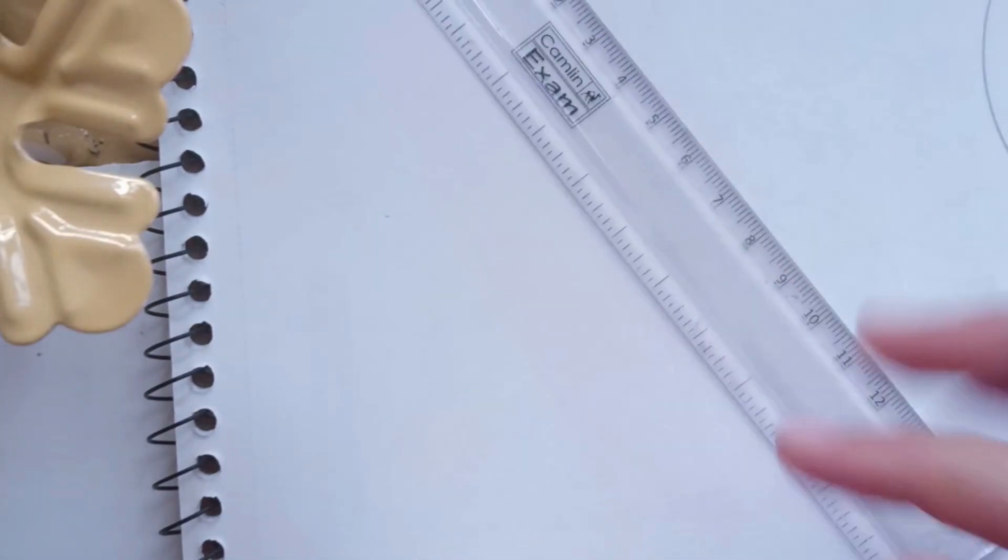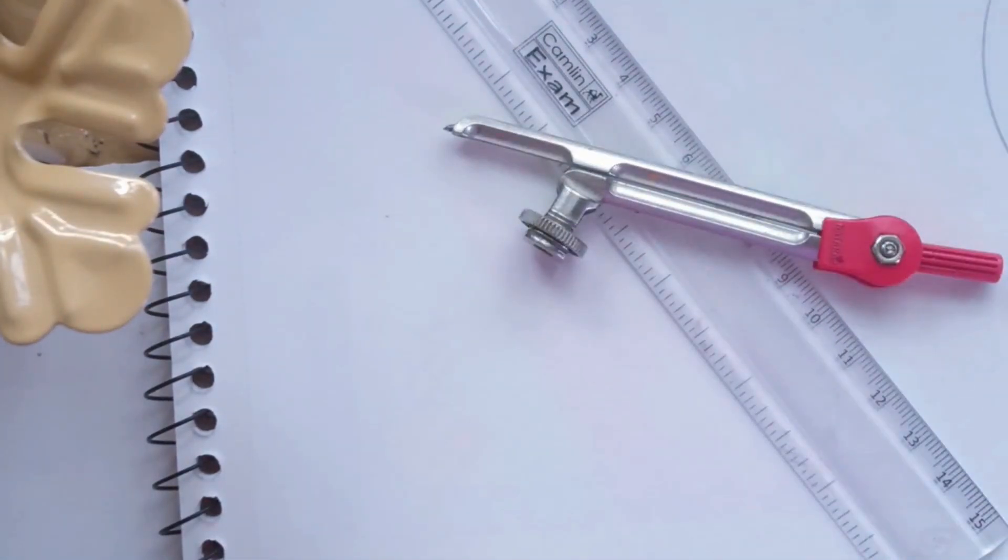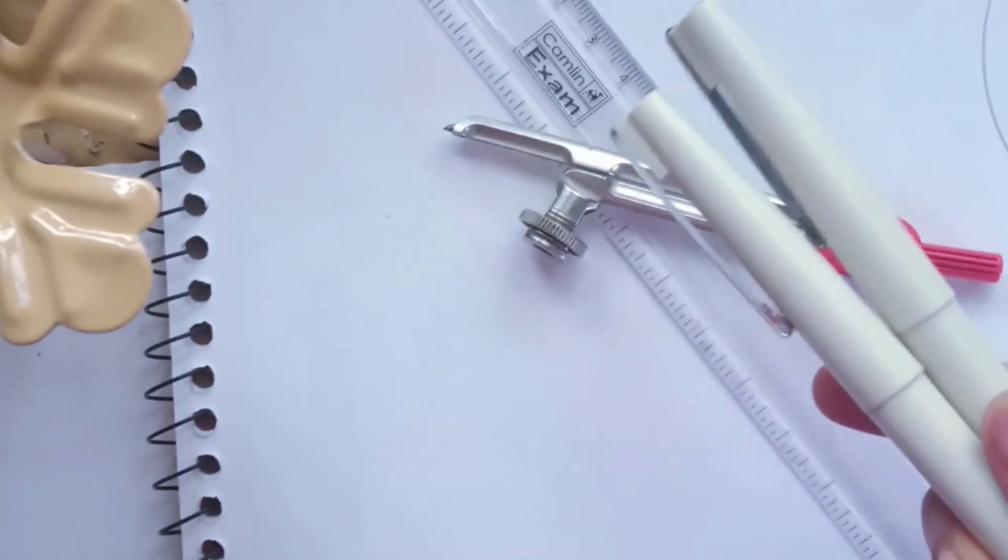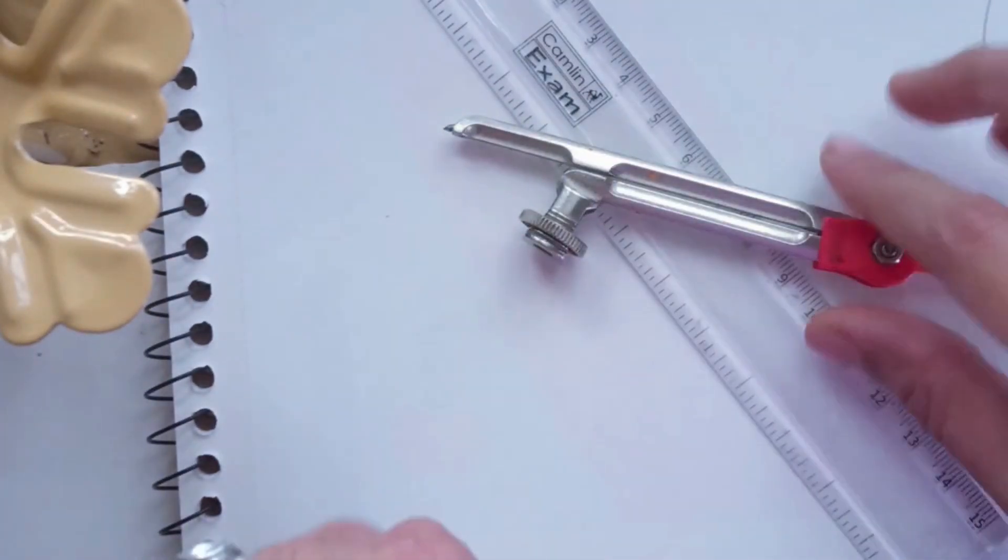Hi friends, today we will see how to construct the angles of 30 degrees, 60 degrees, 90 degrees, 120 degrees, 150 degrees, and 180 degrees. So let's begin.